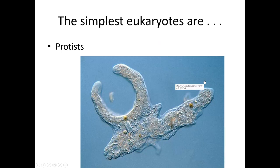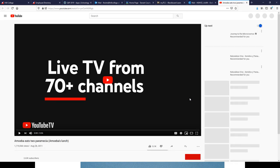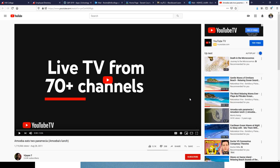The simplest eukaryotes are the protists because a lot of these are single-celled. This is an amoeba — it used to be something they showed you in high school and then they kind of stopped. This amoeba is going to be eating some paramecia, which is another example of a protist that we're going to be seeing a little bit later on.